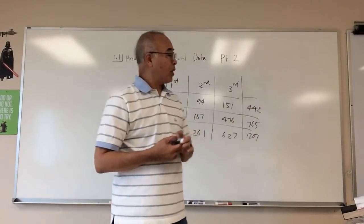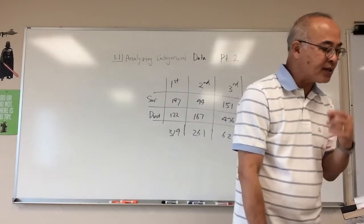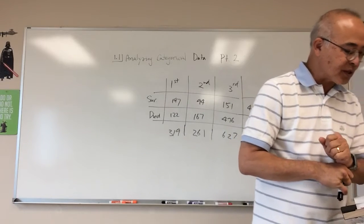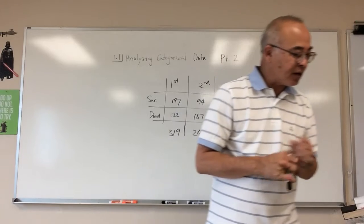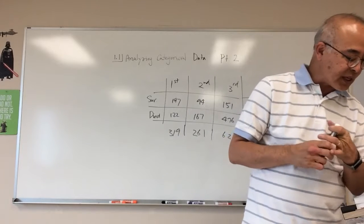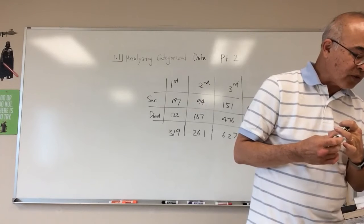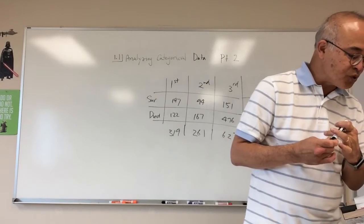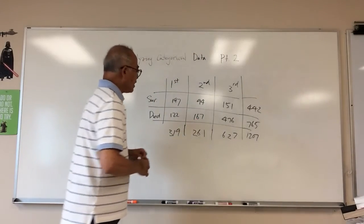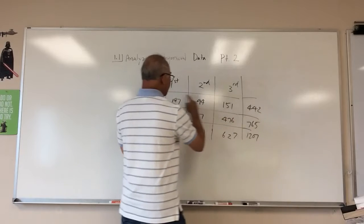Let's continue on with part two of analyzing categorical data, starting on page 17: relationships between two categorical variables. There's a definition for conditional relative frequency — it gives the percent or proportion of individuals that have a specific value for one categorical variable among individuals who share the same value of another categorical variable.